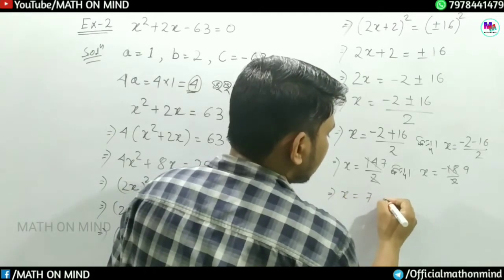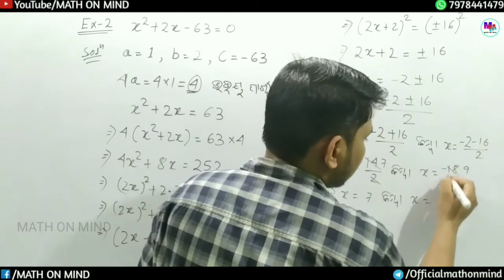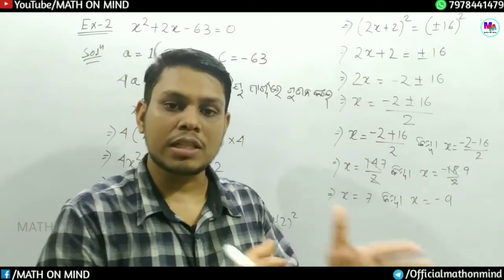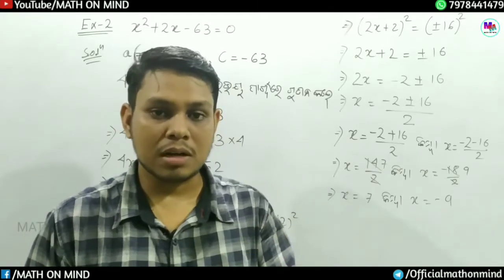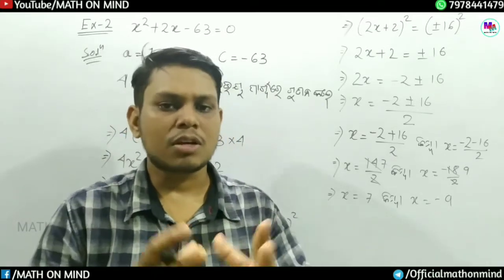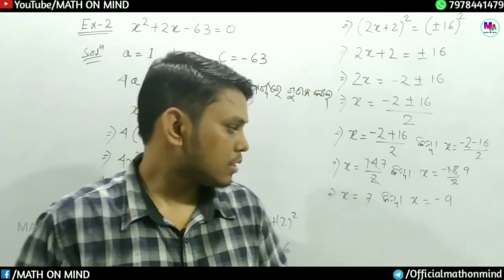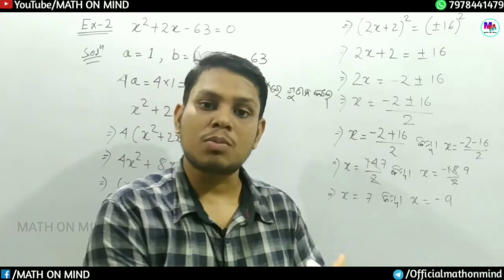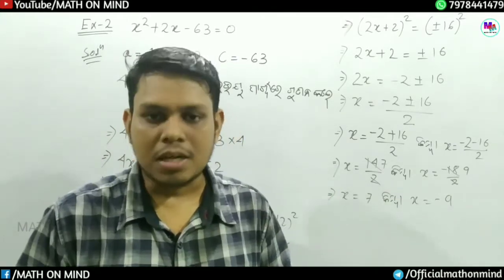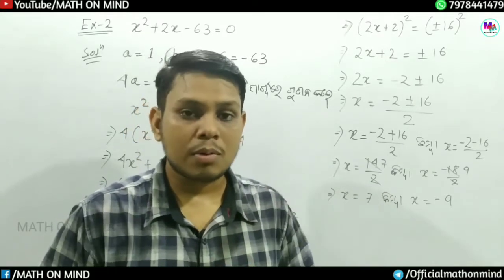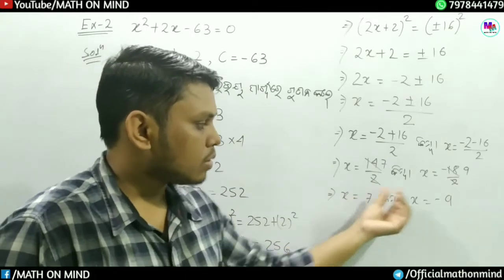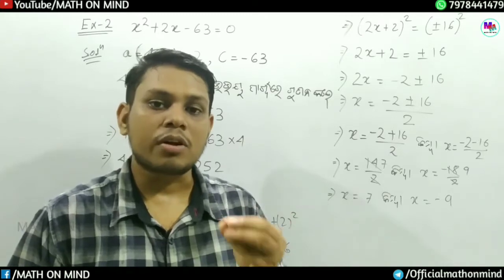Now x is equal to minus 2 plus 16 by 2, or x equal to minus 2 minus 16 by 2. X is equal to minus 2 plus 16 — that's 14 divided by 2. And x is equal to minus 2 minus 16 — that's minus 18 divided by 2. Now let him answer: x is equal to 7, or x is equal to minus 9. So if we look at the formula, our answer is one side over the minus.